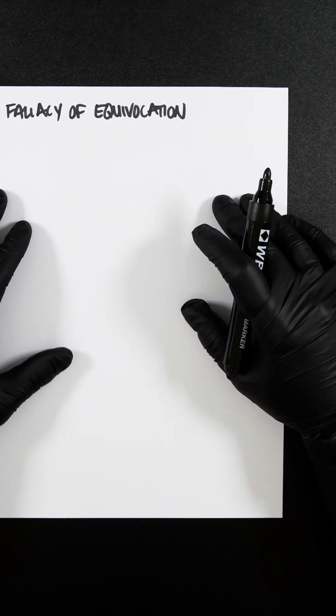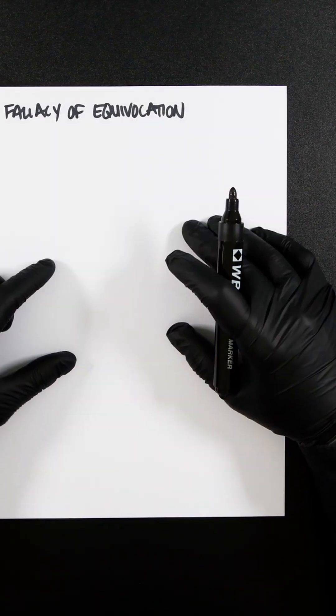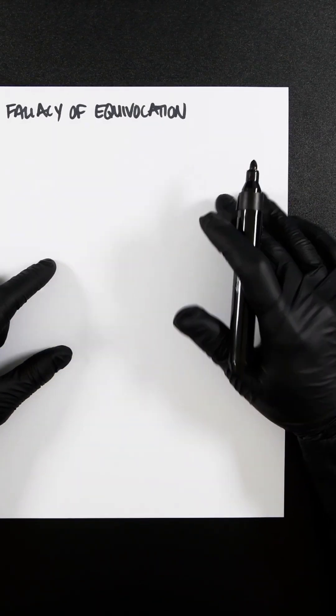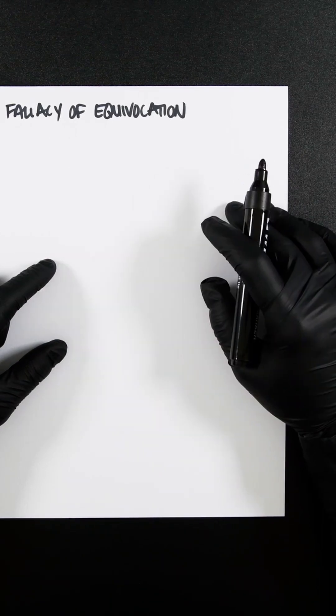Fallacy of equivocation occurs when a key term or phrase is used with two different meanings in the course of an argument. This creates the illusion of valid reasoning, but the conclusion doesn't logically follow because the word shifted its meanings.